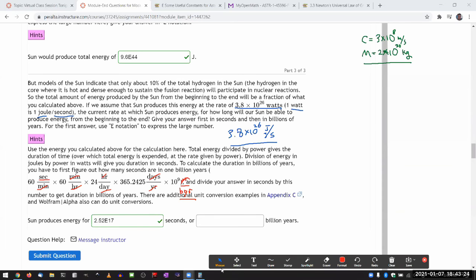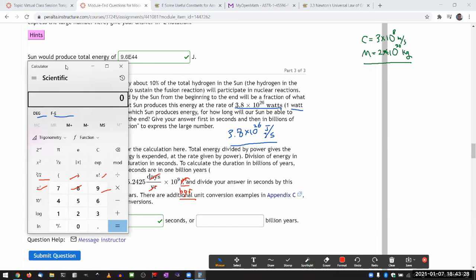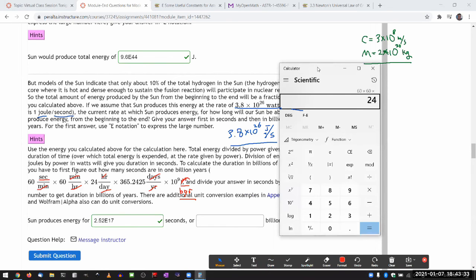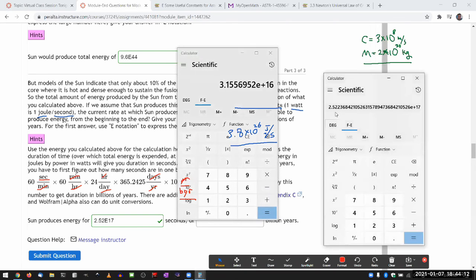So let me do that on a separate calculator, so that I don't wipe out the other number I have. So let me just put all that number in 60 times 60 times 24 times 365.2425. By the way, if you just use the 365, you'll still be fine. The question has enough tolerance for that. And then a billion, 10 to the power of nine equals, that's how many seconds are in a billion year. Let me express that in scientific notation, 3.16 times 10 to the power of 16. So I can take the number that's in the other calculator, that number there, that's the number of seconds. And when I divide it by the number of seconds in a billion year, 3.16 times 10 to the power of 16, that'll give me the number of billion years.